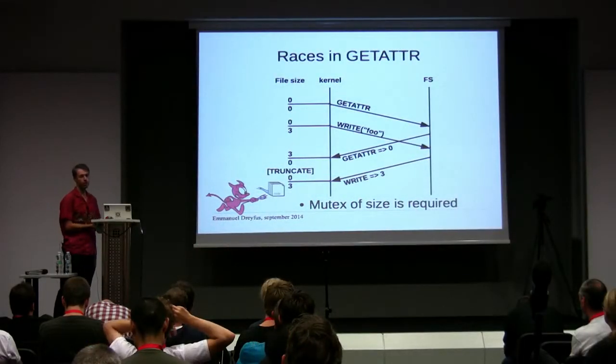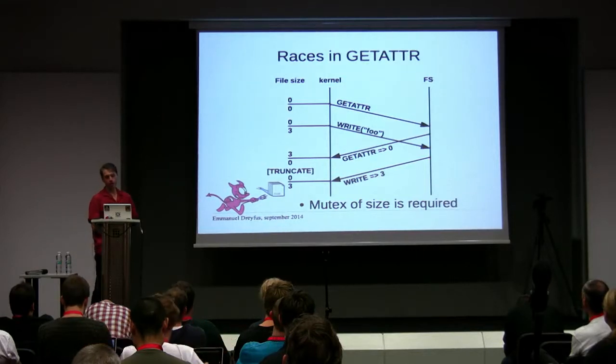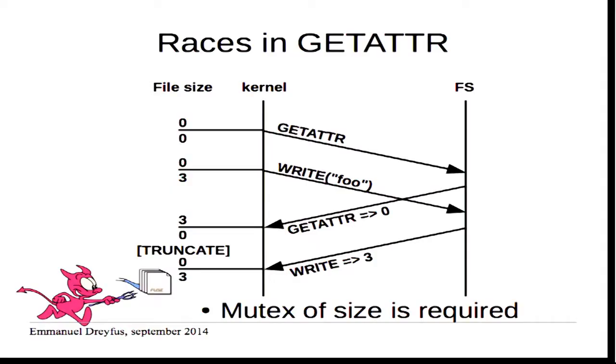Another funny bug: a race in the getattr method. When you send a getattr and then write some data at the end of a file, the kernel has one idea of the file length. After the write it thinks the length is, say, three. Then the getattr reply comes back with an older value from before the write. The kernel truncates the file because it discovers the file is shorter than expected. When the write reply finally comes, the file size is extended back, but there are zeroes in between and data is lost. The solution is simple: a mutex on the size.